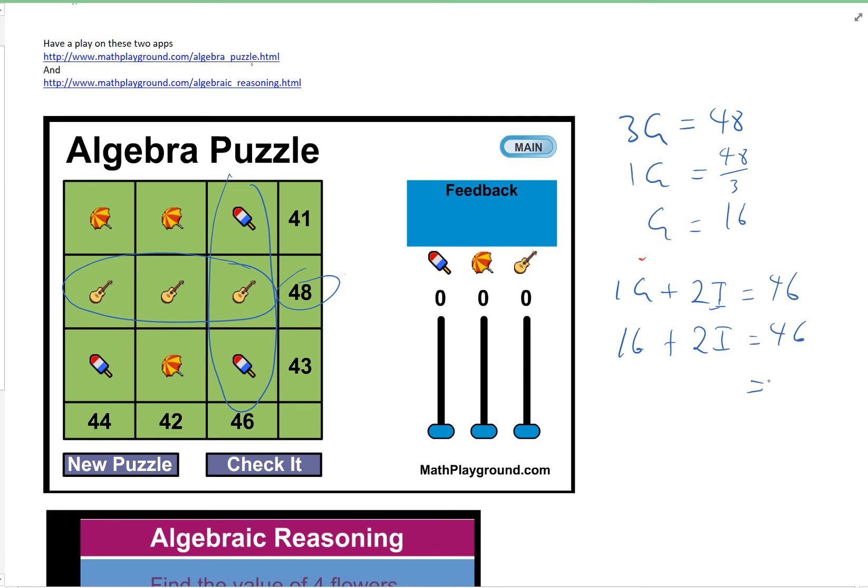So that must mean that two ice creams, 46 take away 16, two ice creams are going to have to be equal to 30, so that must mean an ice cream's got to be equal to 15.